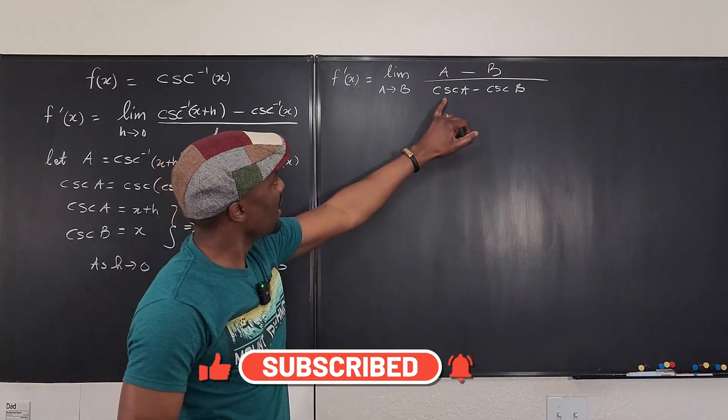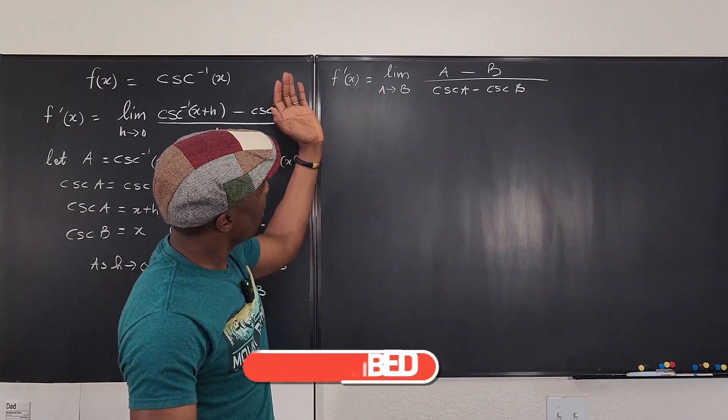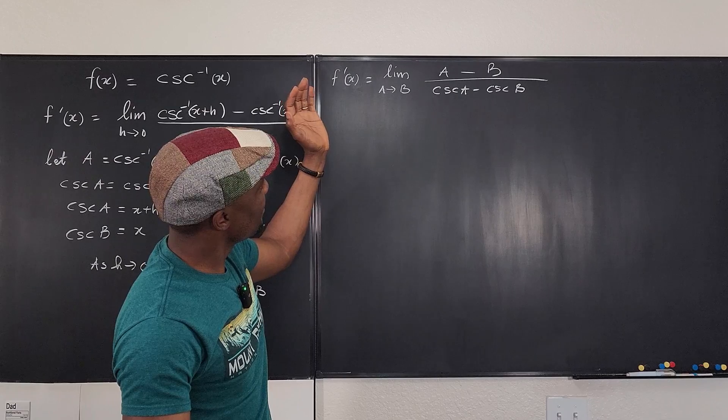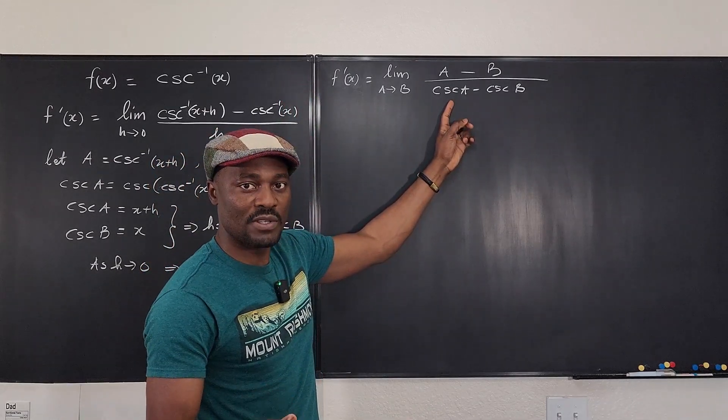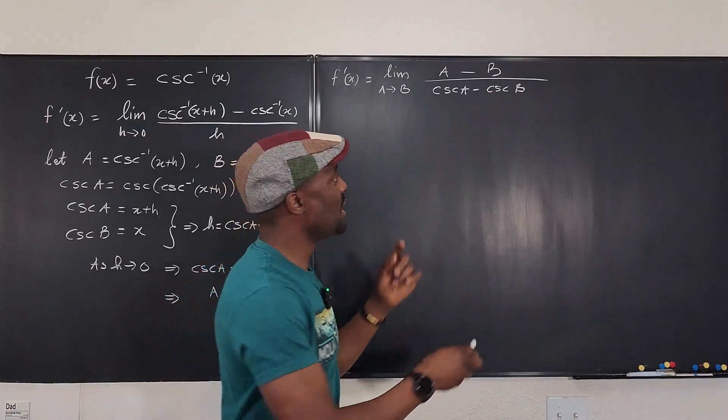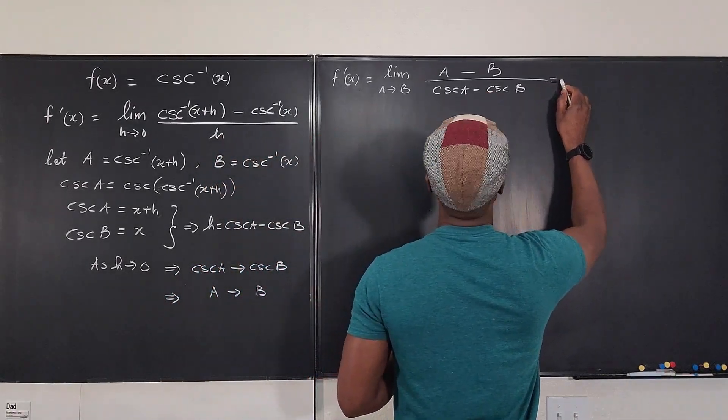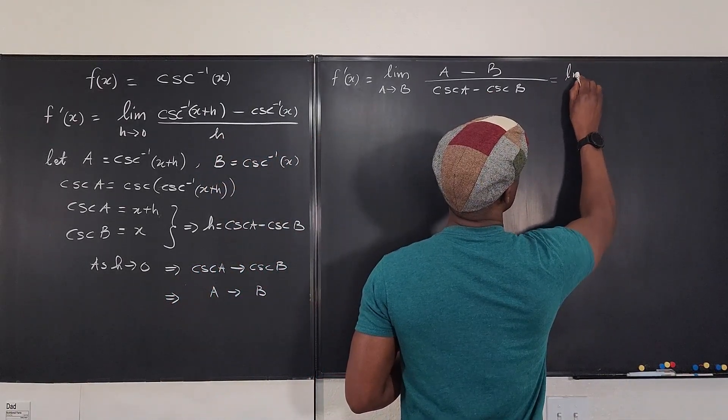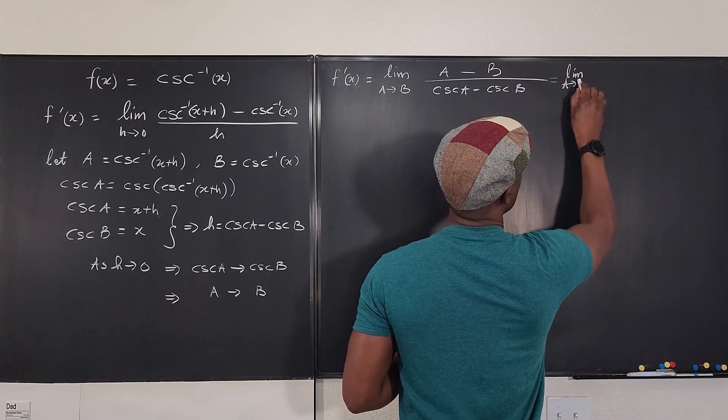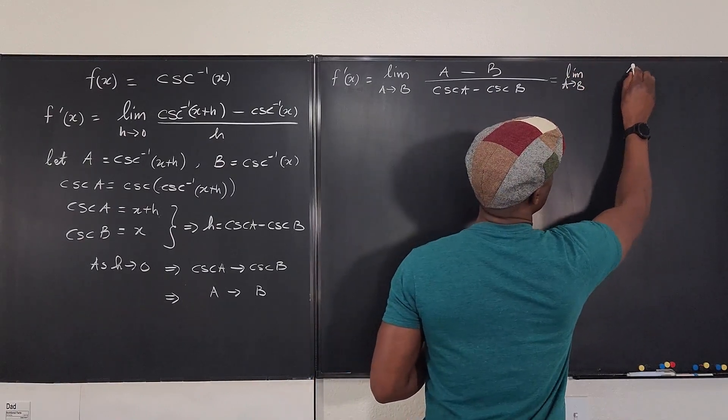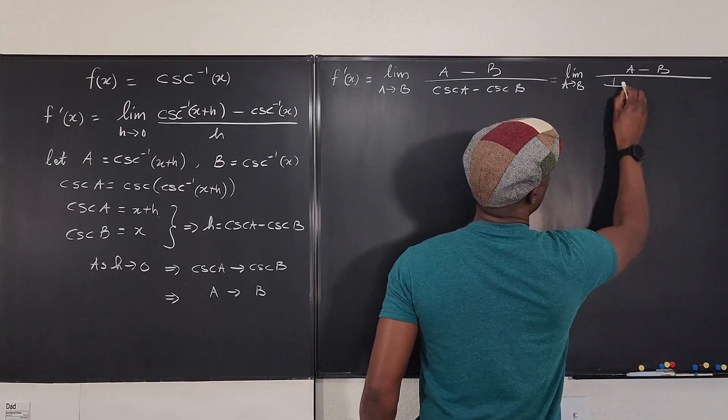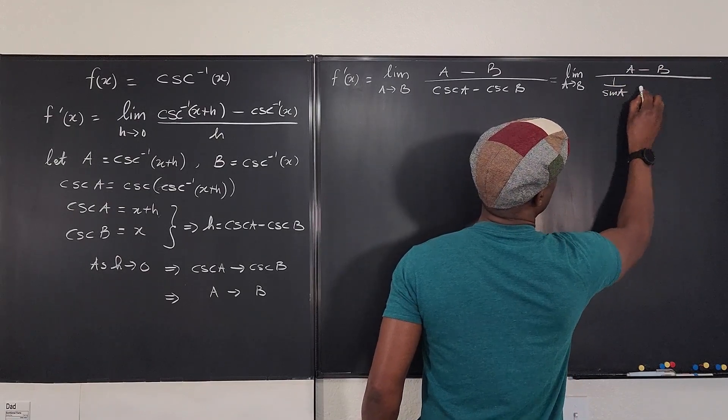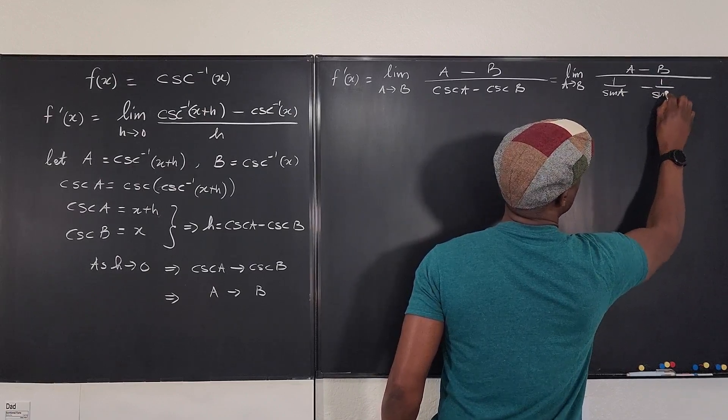As a goes to b is going to be this. We said this is a. So I'm going to write a minus this. We said, let it be b. And then divided by what's under h. We said h is cosecant a minus cosecant b.